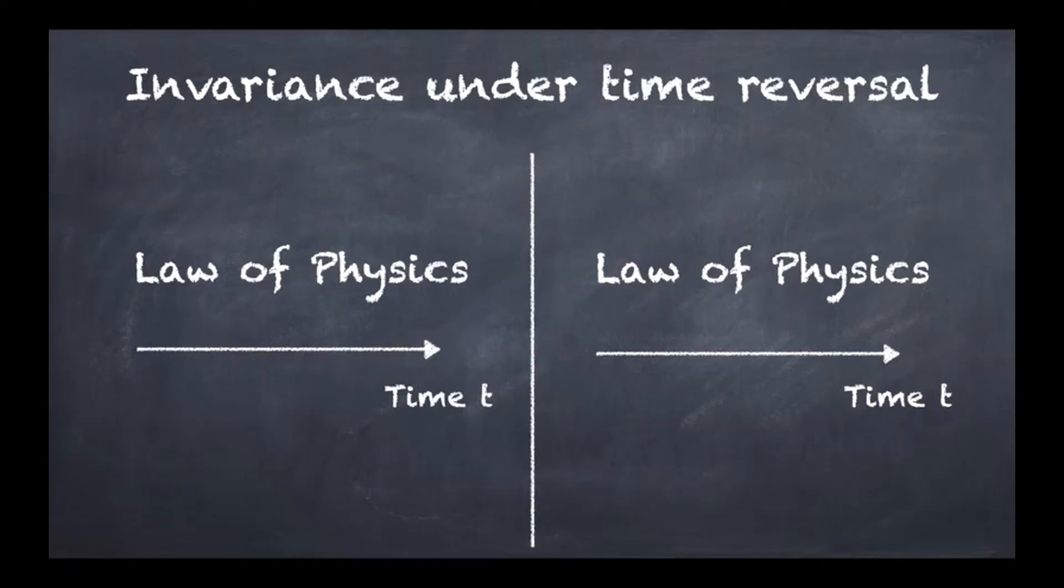The concept we're going to focus on is called invariance under time reversal. The way it works is as depicted: you've got a law of physics on the left and on the right side, just to say that this law might actually be different. So the law on the left might be some particular law you found out, and the law of physics on the right is a different one.